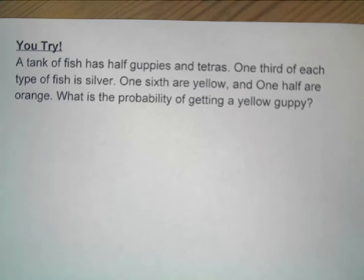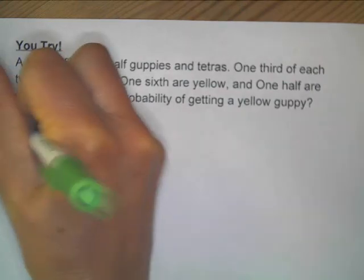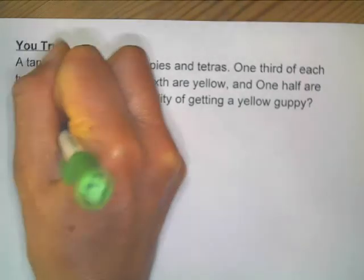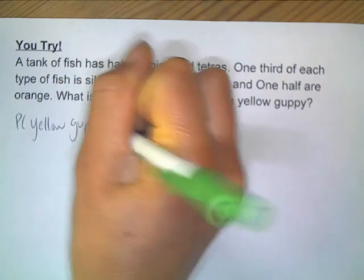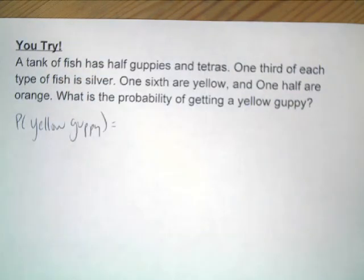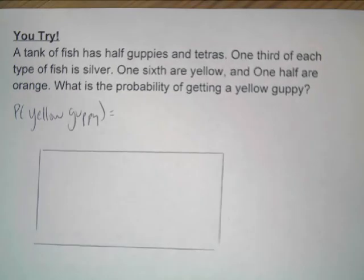A tank of fish has half guppies and the other half are tetras. One third of each type of fish is silver, one sixth are yellow, and one half are orange. What is the probability of getting a yellow guppy? See if you can create a probability table — I'll pause as I go, but try to get it on your own first.